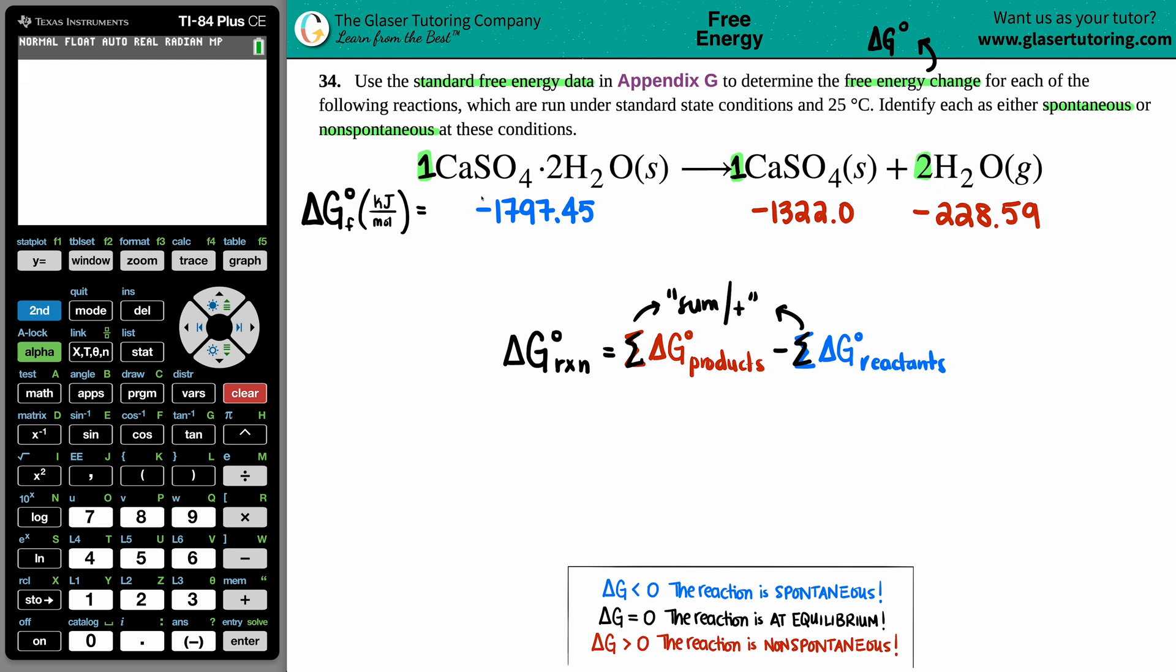For each number, you're going to multiply that value from the textbook by the coefficient. So I would do one times negative 1791.45—it's going to be the same number, but I'm just showing you. When you have 2H₂O, you take this value and multiply it by two. And for one CaSO₄, multiply by one. Now it's still the sum, which means you have to add up your sides.